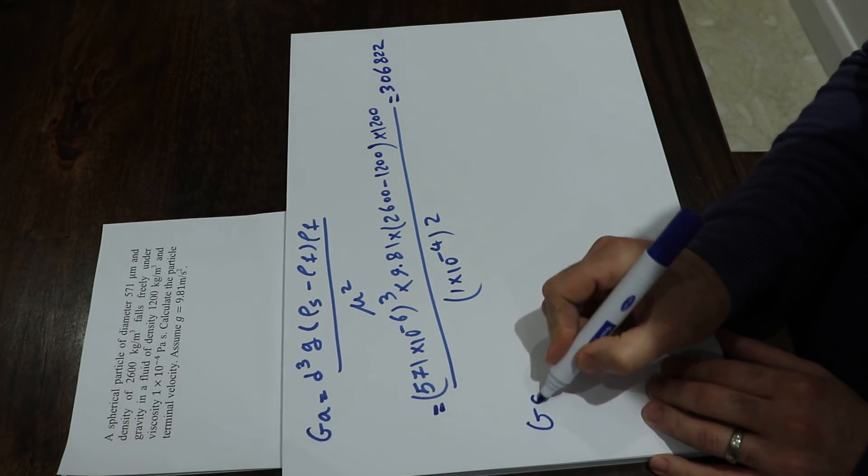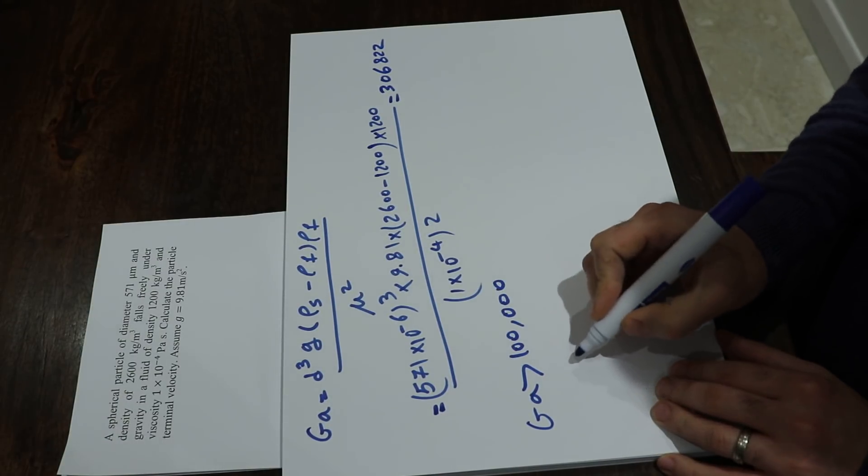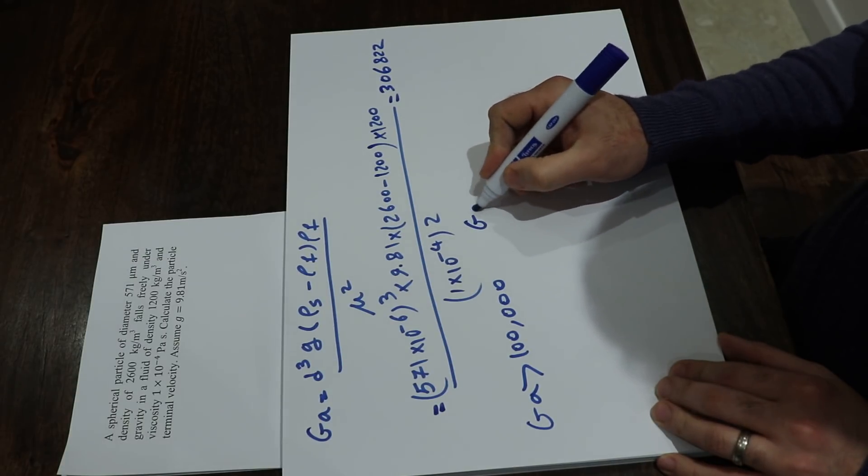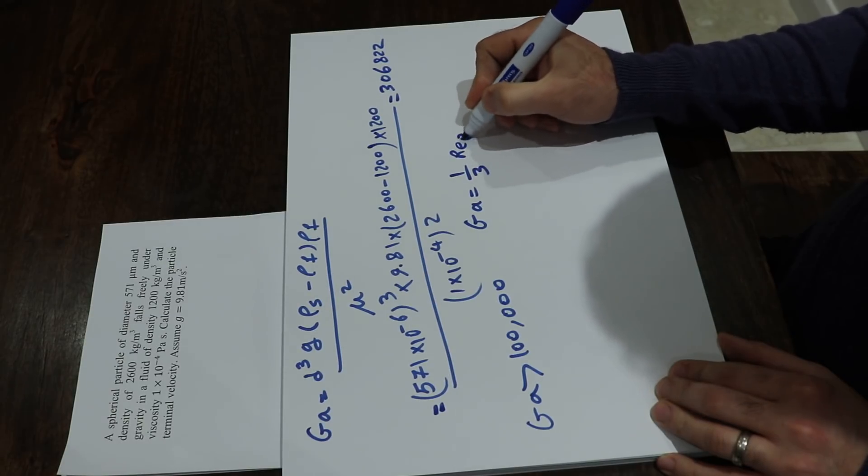Since the Galileo number is more than 100,000, then you can use this relationship between the Galileo number and the Reynolds number. The Galileo number will be equal to one third Reynolds number with the power of 2.